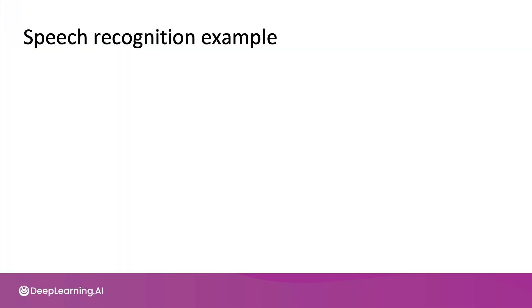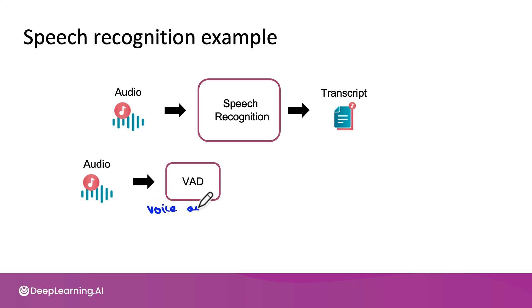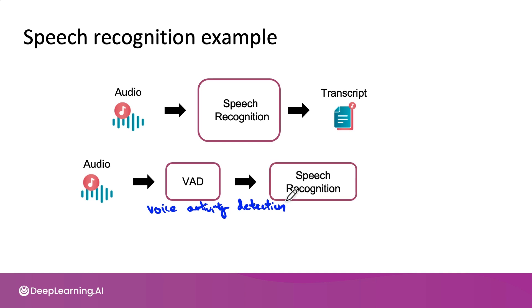Let's continue with our speech recognition example. You've seen how a speech recognition system may take as input audio and output a transcript. The way that speech recognition is typically implemented on mobile apps is not like this, but instead is a slightly more complex pipeline, where the audio is fed to a module called a VAD, or a voice activity detection module, whose job it is to see if anyone is speaking. Only if the VAD module thinks someone is speaking does it then pass the audio on to a speech recognition system, whose job it is to generate the transcript.